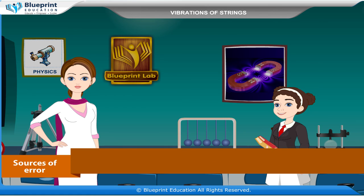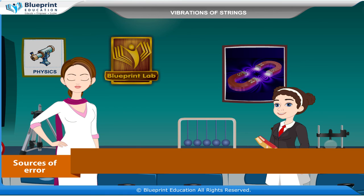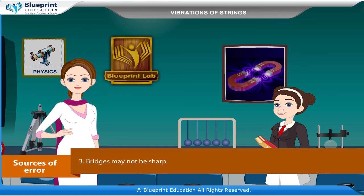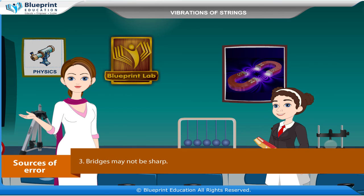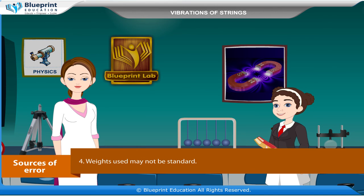Sources of Error: 1. The wire may not have a uniform area of cross section. 2. The pulley may not be frictionless. 3. The bridges may not be sharp. 4. The weights used may not be standard.